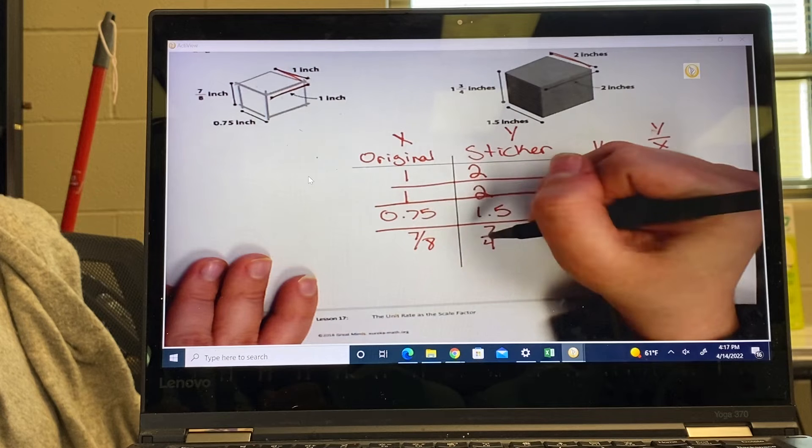After you do that you do number three. You decide what you're going to do. You are going to then divide y by x. Y divided by x.